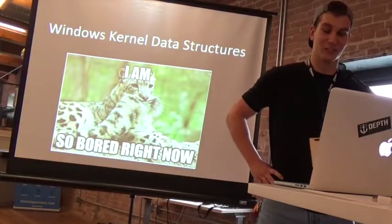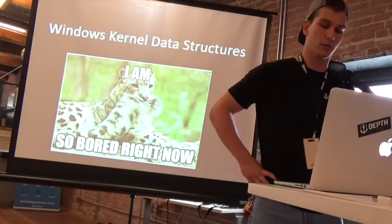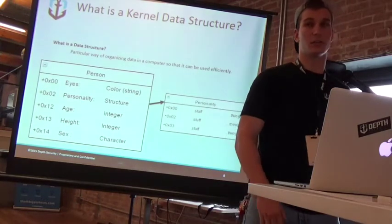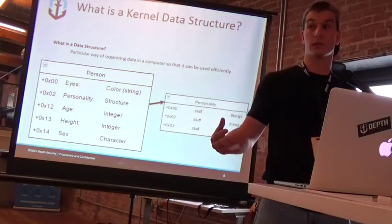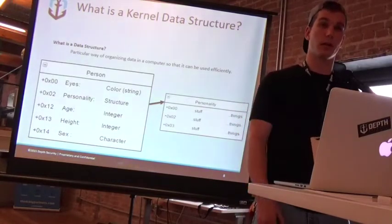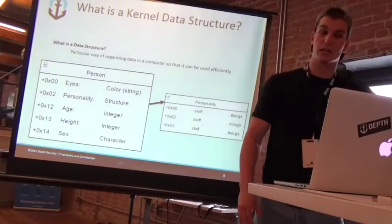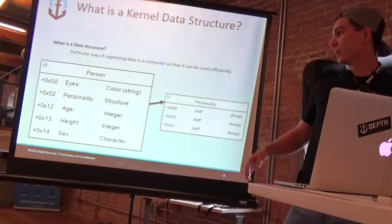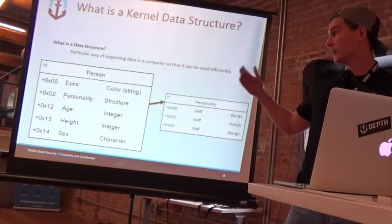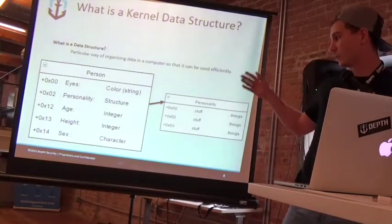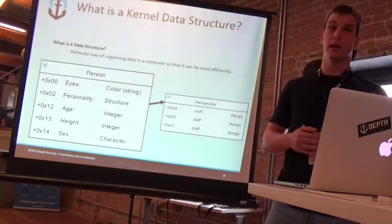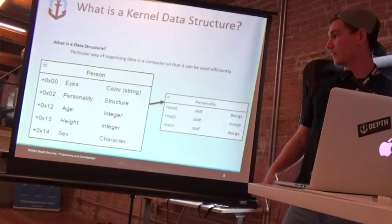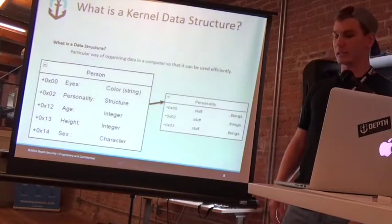Some Windows kernel data structures. I've included a picture because they're not exactly the most fun thing to go over, but we're going to touch on them real quick. Before I can talk about the different data structures, we need to discuss what a data structure is in the first place. By definition, it's a particular way of organizing data in a computer so that it can be used efficiently. I've created two diagrams here. The analogy is going to be like a person — you'll find things like their eyes and the color of their eyes. Their personality actually points to an alternative structure because personality encompasses a lot of data, so it points to an embedded structure. After that you've got things like age and height which are integers, and sex being a character.